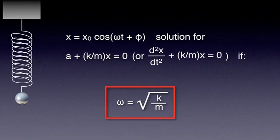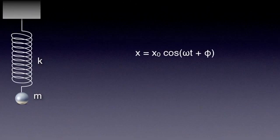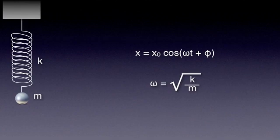And this is the equation we were looking for. It tells us how the displacement of a mass m oscillating while attached to a spring of spring constant k changes with time: x equals x₀ cosine(ω·t + φ), where omega is the square root of k over m. x₀ and phi can be determined from the initial conditions — in other words, they are related to the manner in which the oscillator is set in motion.